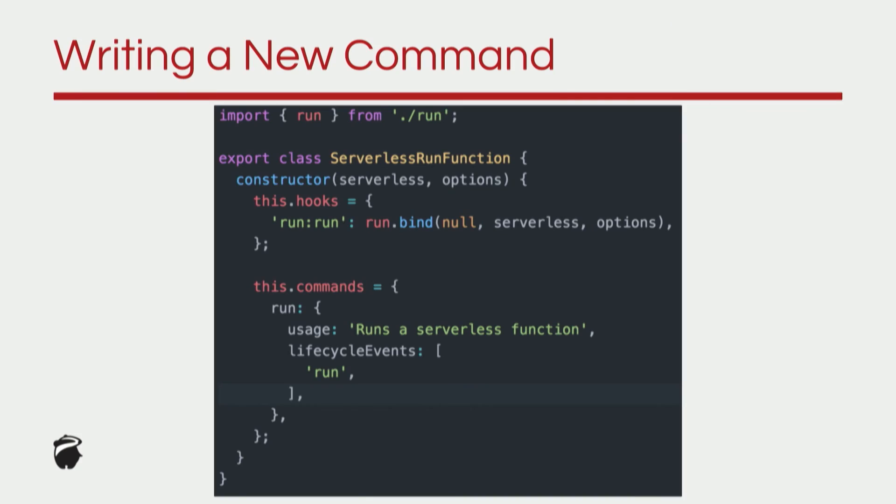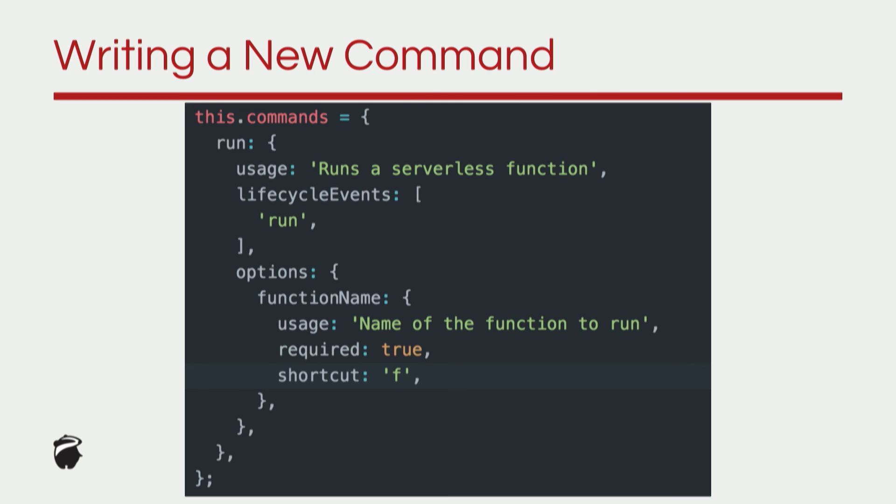Then we have a hook for the particular command. One more important thing is that you can also specify options for your command — when you want to run a function, you also need to say which function to run. You just specify these are the options, these are the required options, and there are some shortcuts. It's extremely simple to write your own stuff. The only tricky bit is writing the actual implementation — taking the serverless object and figuring out what data is where — but that's fairly normal programming. You just need to figure your way around it, and it's quite simple.